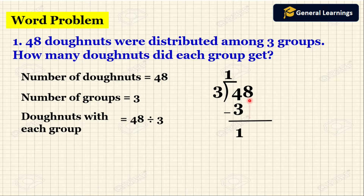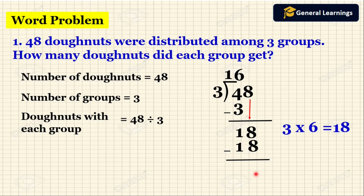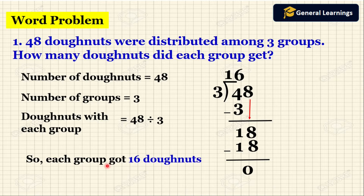Now bring down the next number 8. We need to divide 18 by 3. Checking the table of 3: 3 sixes are 18. Write 6 in the quotient and 18 below, draw a line, then subtract. We get the answer as 0. So how many donuts did each group get? Each group got 16 donuts. The quotient is the answer.